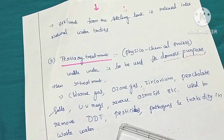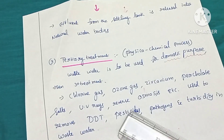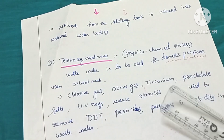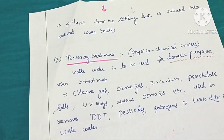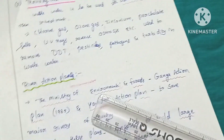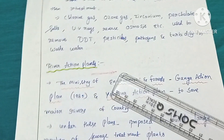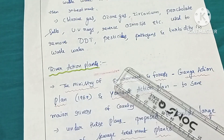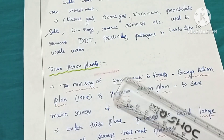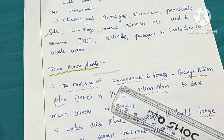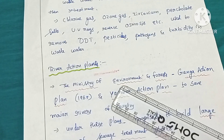Through tertiary treatment, pathogenic organisms, DDT, and pesticides are removed. After that, the treated water is transferred to the main water resources and can be used for drinking, bathing, and cooking purposes.